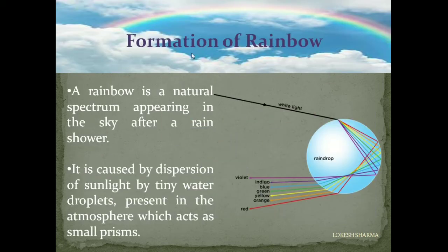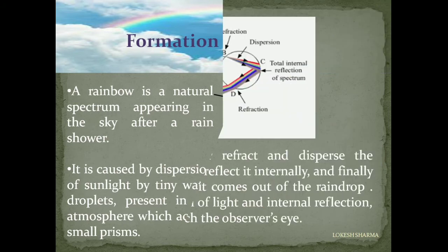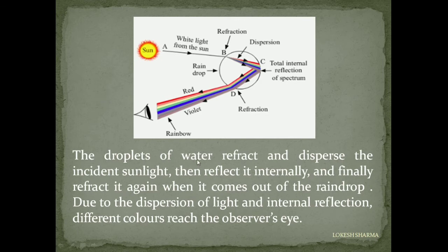Next, the formation of rainbow. A rainbow is a natural spectrum appearing in the sky after a rain shower. It is caused by dispersion of sunlight by tiny water droplets present in the atmosphere, which act as small prisms. The droplets refract and disperse the incident sunlight, then reflect it internally, and finally refract it again when it comes out of the raindrop. Due to the dispersion of light and internal reflection, different colors reach the observer's eye.